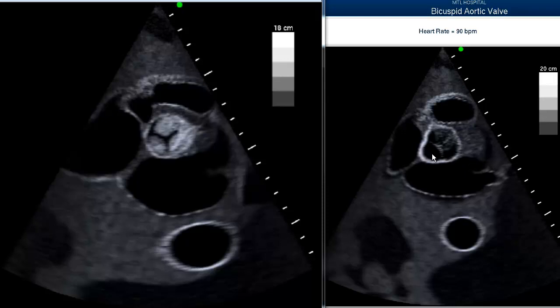So, a few things that we need to know about bicuspid aortic valve are that it is a congenital condition, which is often present at birth, or if you have it, it will be present at birth, but it's often not detected until later in life.